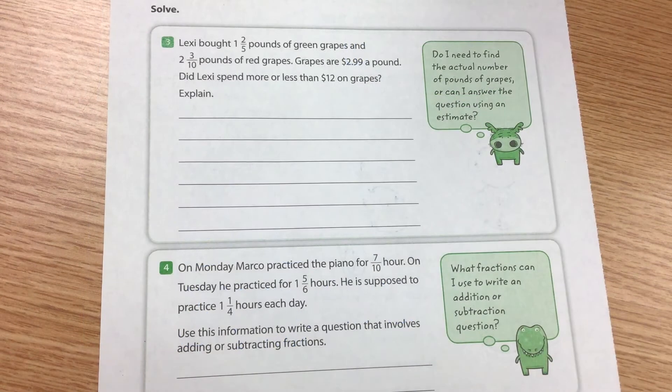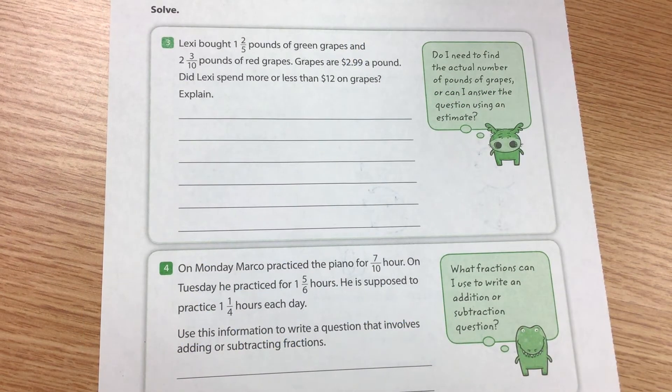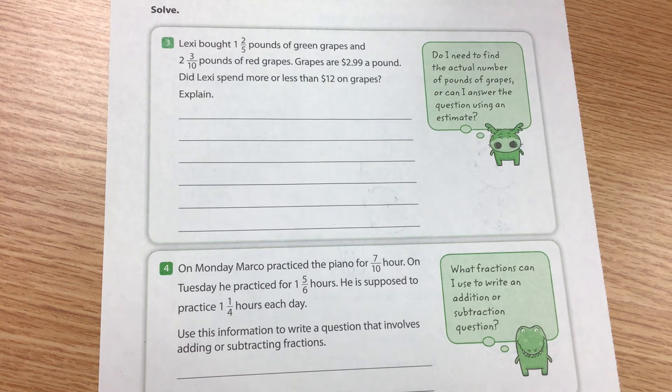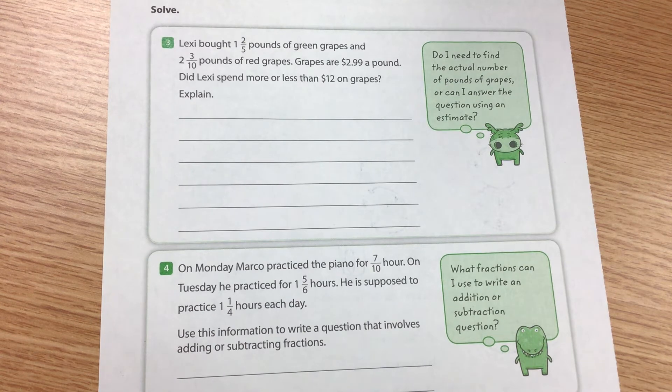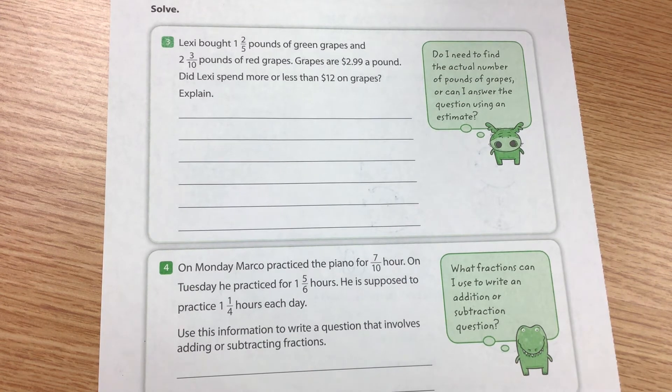So our next question says Lexi bought one and two-fifths pounds of green grapes and two and three-tenths pounds of red grapes. Grapes are $2.99 a pound. Did Lexi spend more or less than $12 on grapes? Explain. Notice how we're not actually finding out the exact amount of money she spent on grapes. It's just asking us to estimate.